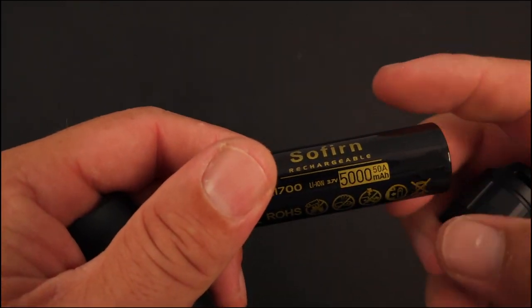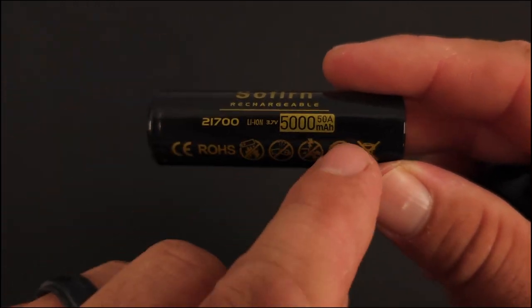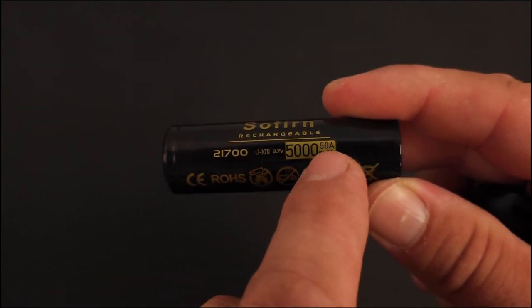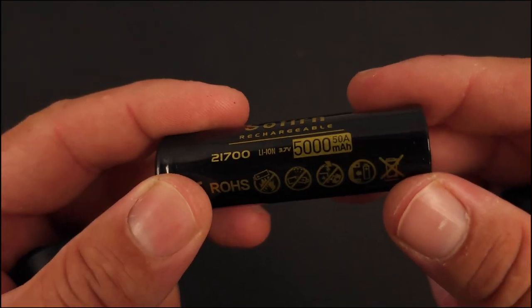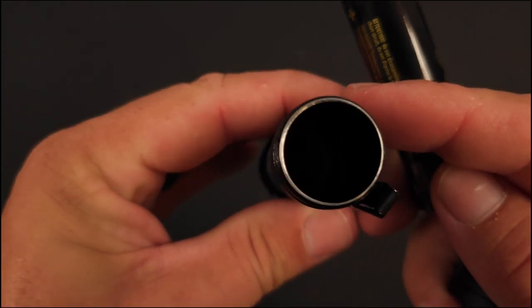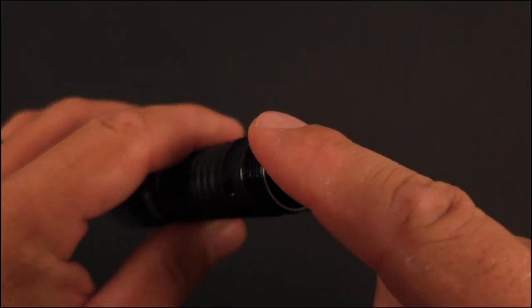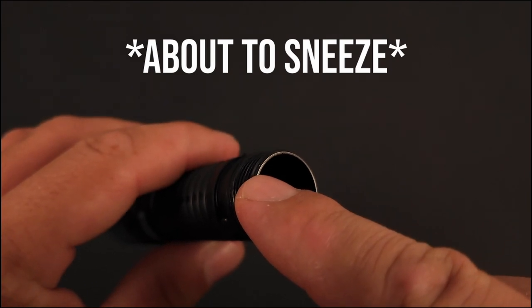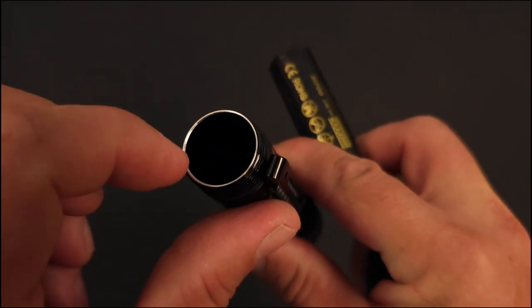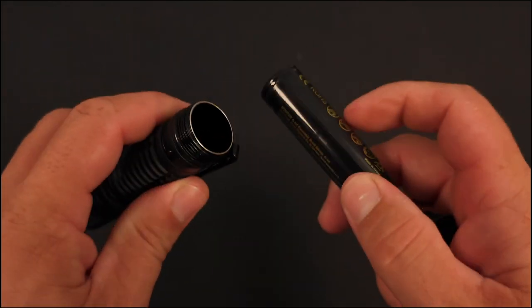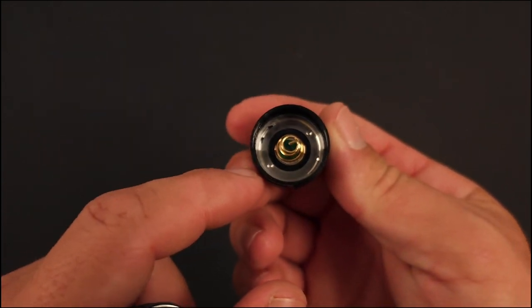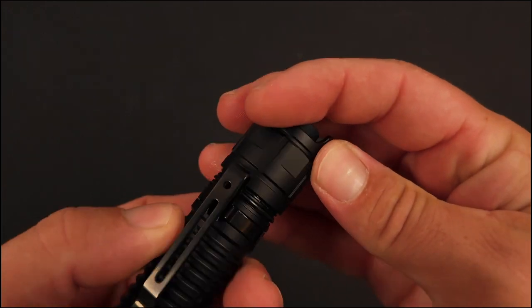Let's go ahead and take this tail cap off. You have your Sofirn branded 21700 cell. Frankly I would take that 50 amp ability with a grain of salt - I don't think we're going to get 50 amps out of this - but it is a nice flat top cell, huge contact patch here. You'll see this raw edge here that's going to make contact, so when you do have that battery in place it'll make contact with this switch and get all that juice over to that driver and illuminate your board.